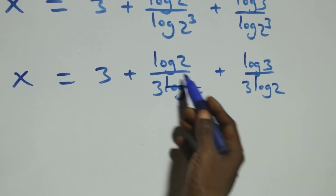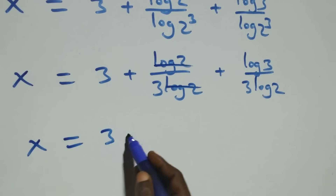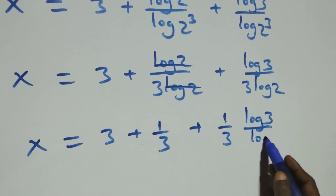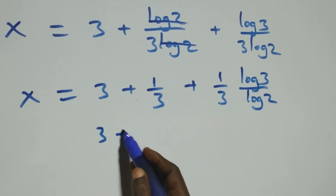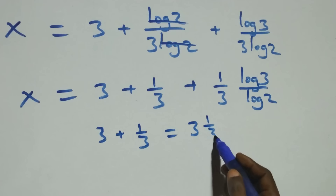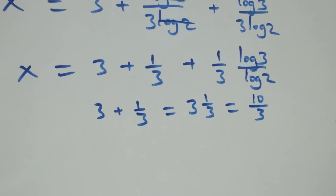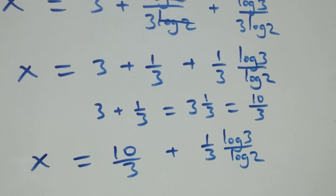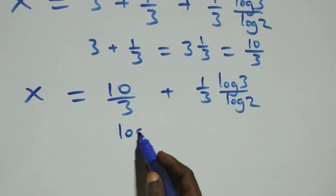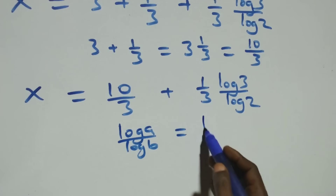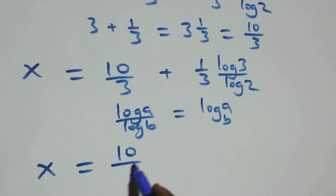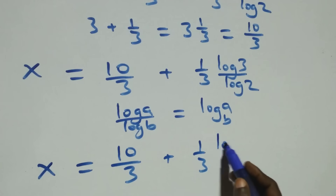Here, log 2 cancels each other, leaving 1 over 3. So x equals 3 plus 1 over 3 plus 1 over 3 times log 3 over log 2. And 3 plus 1 over 3 is the same as 3 and 1 over 3, which equals 10 over 3. So we have x equals 10 over 3 plus 1 over 3 log 3 over log 2. Then, we apply the change of base rule: log a over log b is the same as log a to base b. What we have becomes x equals 10 over 3 plus 1 over 3 log 3 base 2.